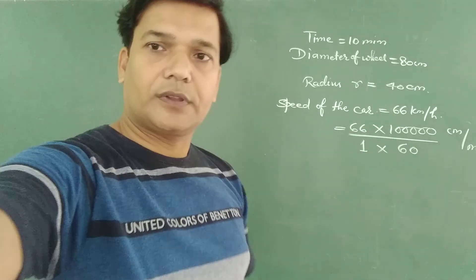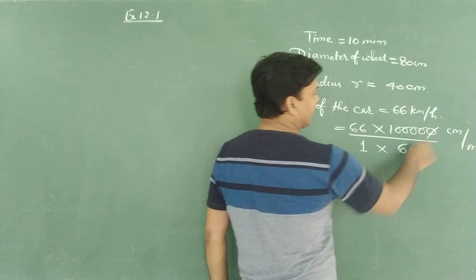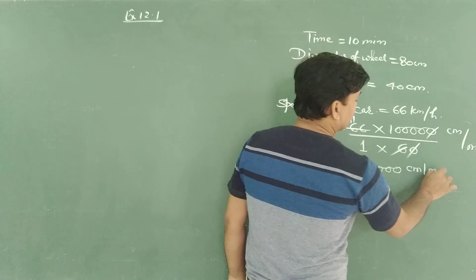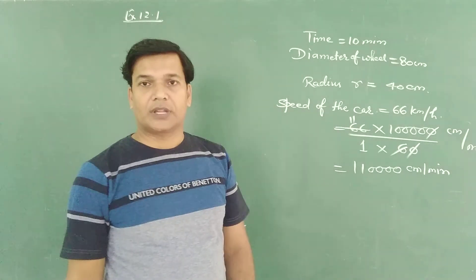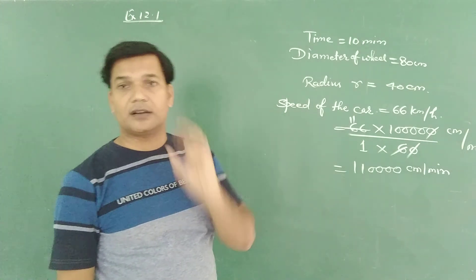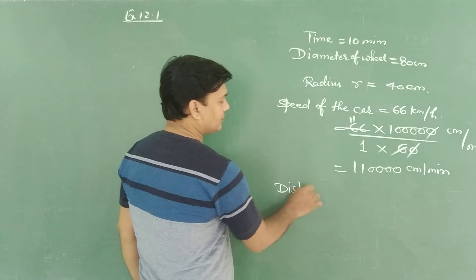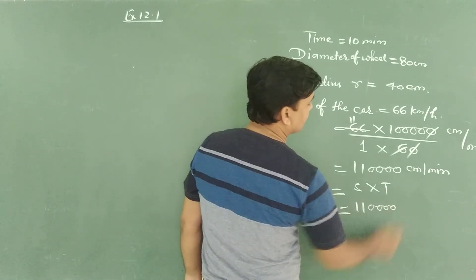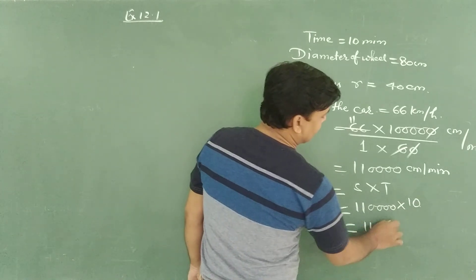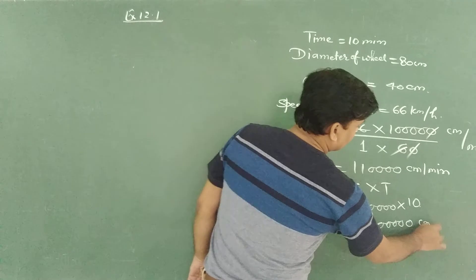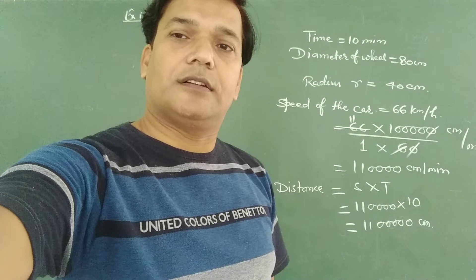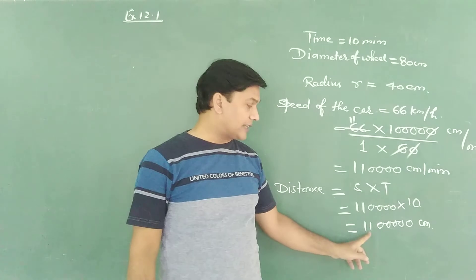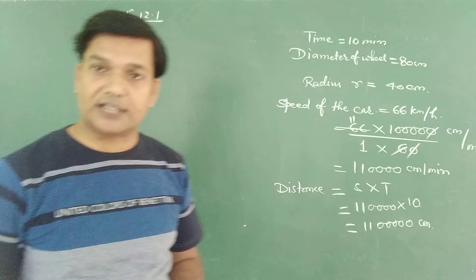Now canceling: 66 into 1 lakh divided by 60 — four zeros cancel, giving 1,10,000 centimeters per minute. This is the speed of that car. Speed multiplied by time gives distance. So the distance traveled by the car in 10 minutes is 1,10,000 into 10, which gives 11 lakh centimeters.